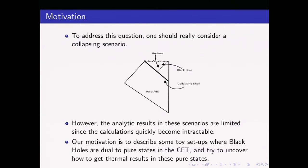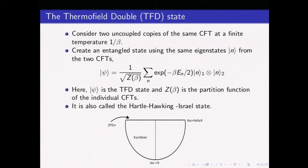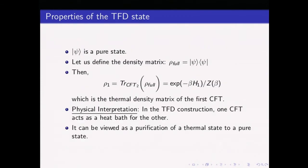Let's begin by describing what is called the thermofield double state. The thermofield double state is a very old construction. The basic idea, in the case of CFTs, is that if we take two uncoupled copies of the CFT each with a finite temperature given by beta inverse, then you can create a state by entangling these two CFTs in a particular fashion. Psi is the thermofield double state, and Z_beta is the partition function of the individual CFTs. In the bulk, this state is called the Hartle-Hawking-Israel state.